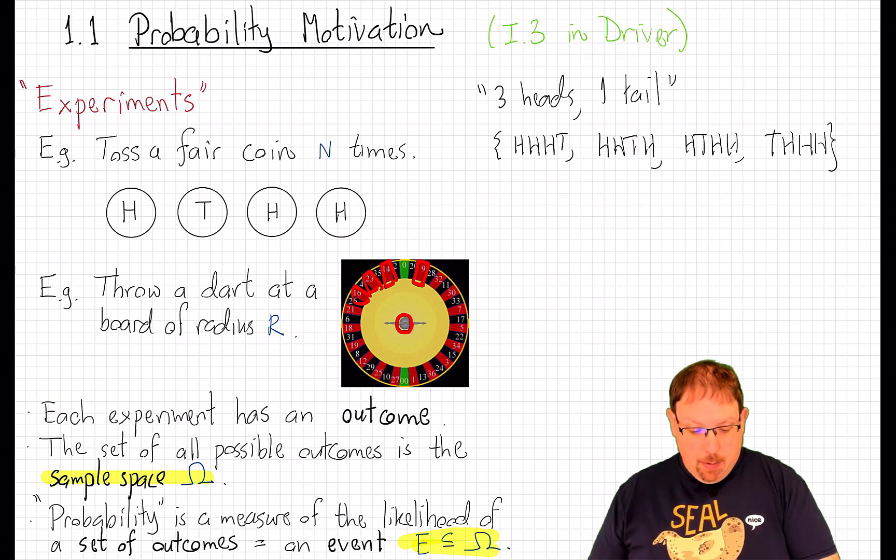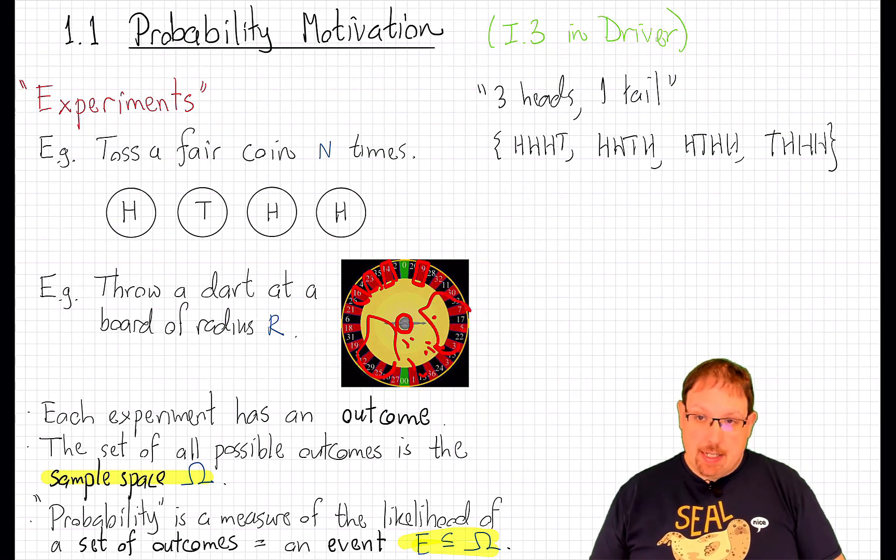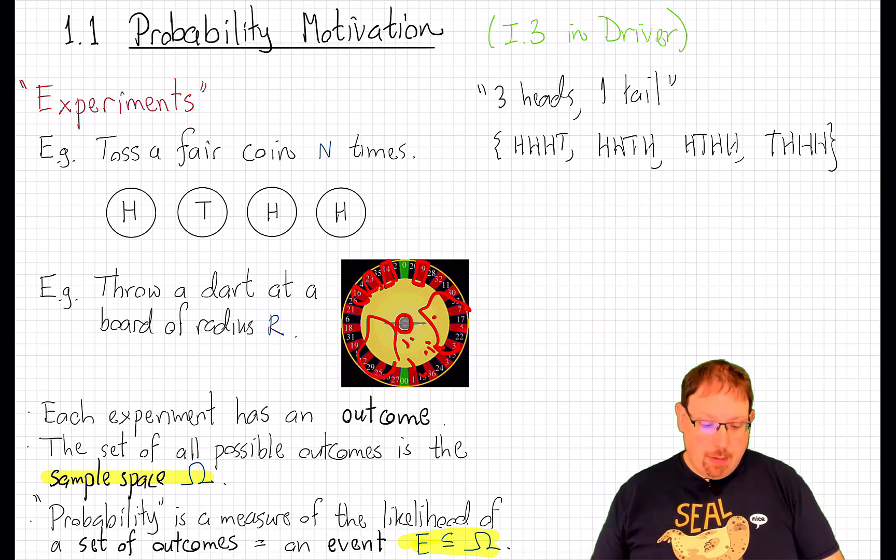But our event could, in principle, be a very strange, nasty, foggy subset of this disk. And then we might run into strange paradoxical problems like we did in our motivating example.